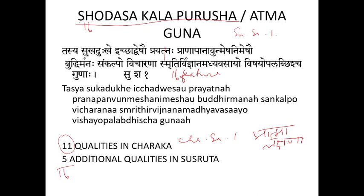Explaining the 16 Gunas: Sukham is happiness, Dukham is sadness, Ichcha is desire, Dvesha is aversion, Prayatna is effort, Prana and Apana are respiration and nutrition, Unmesha and Nimesha are opening and closing of eyes, Buddhi is intelligence, Manasa Sankalpa is thinking and determination, Vicharana is discrimination, Smridhi is memory, Viknanam is getting information, Adhyavasaya and Vishyobaladvih are perception. These are all the Gunas of Atma — the features indicating the presence of Atma in the body.